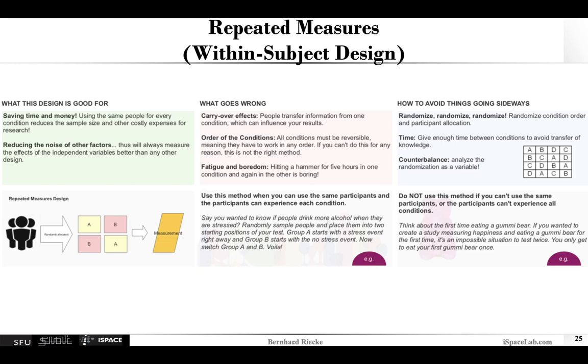So basically the order of the conditions matter. The conditions must be reversible. And another challenge can be if you have multiple conditions, the whole experiment itself for each participant can be a bit lengthy. So fatigue, boredom, these kind of things can also be a bit of a challenge.